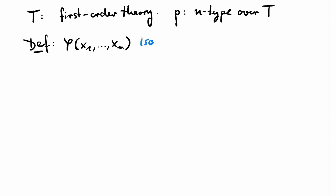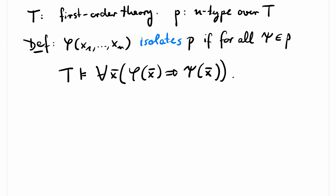A formula phi isolates P if it implies, over T, every formula in P. So if a type is isolated by a formula, then this formula fully determines the type. A type is called principal if it is isolated by some formula.